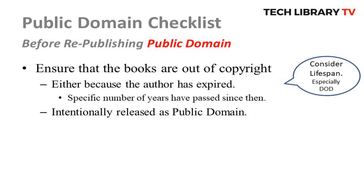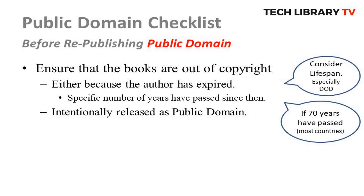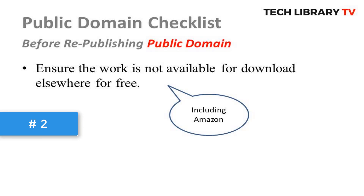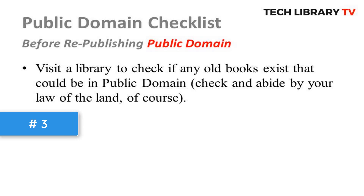When evaluating whether the book is in the public domain or not, consider the author's lifespan — especially the date of death — to calculate if 70 years have passed. Most countries use that 70-year rule, but it could vary by country. We must ensure that the book is really in the public domain and that there are no copyright problems or claims associated with it. Number two: the work should not be available elsewhere freely for download, Amazon included.